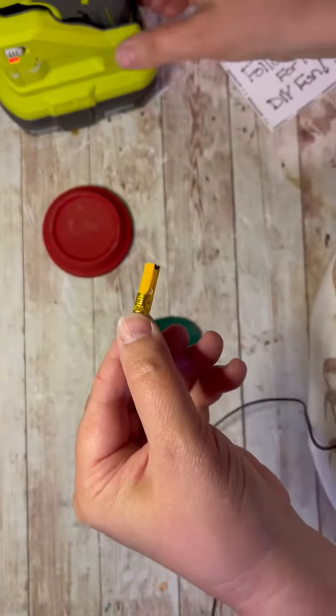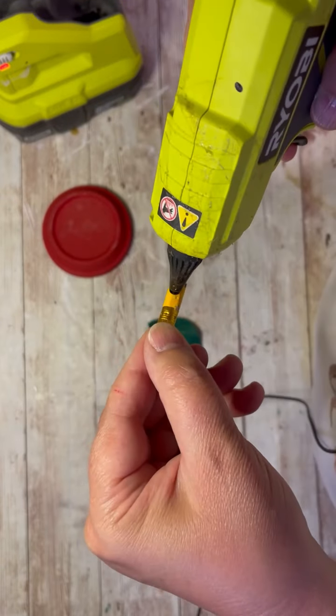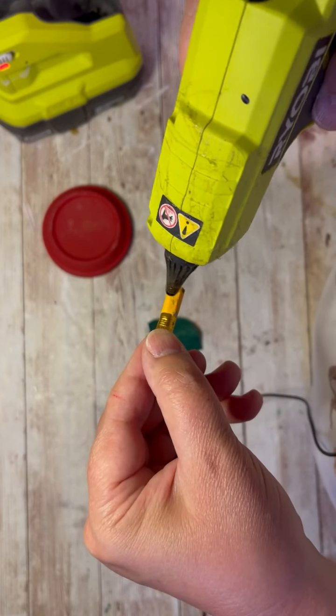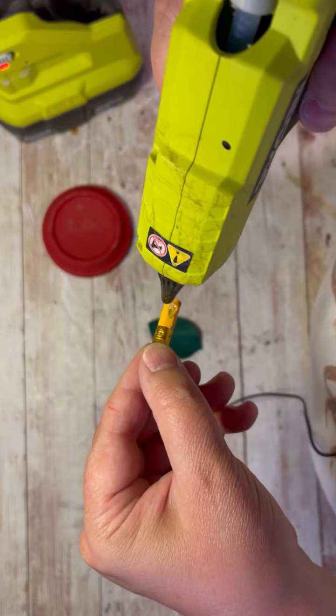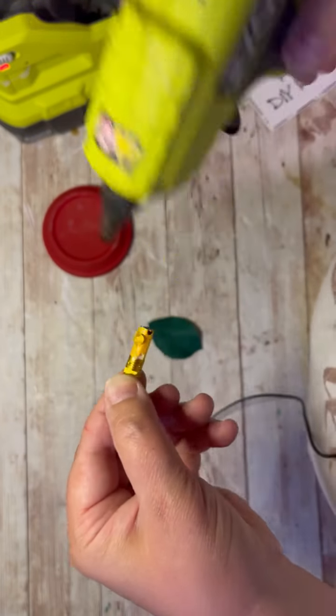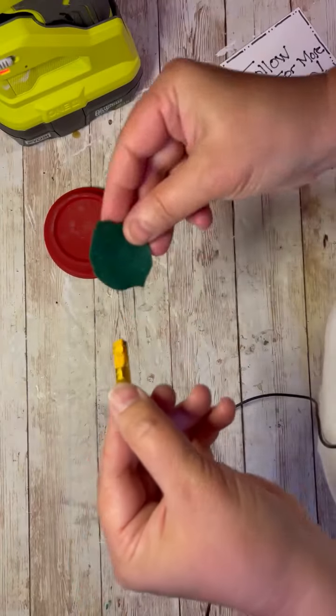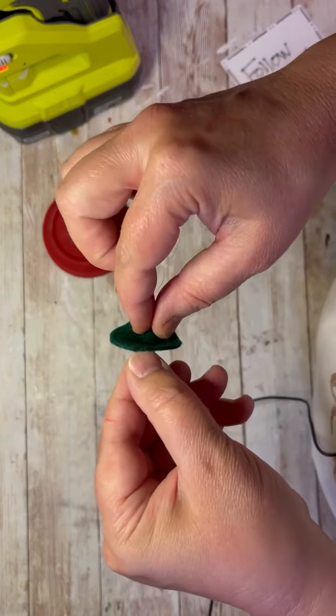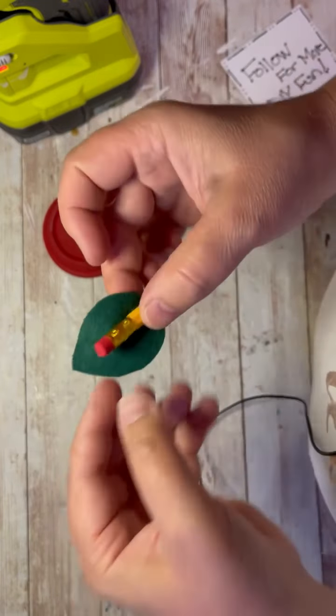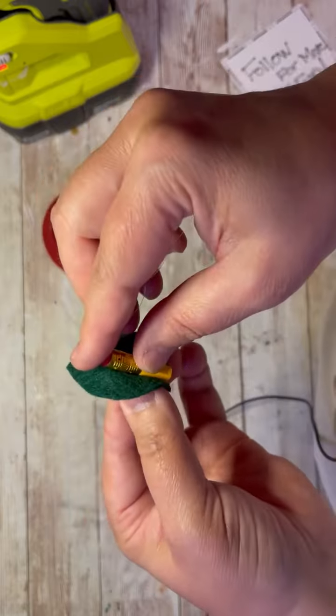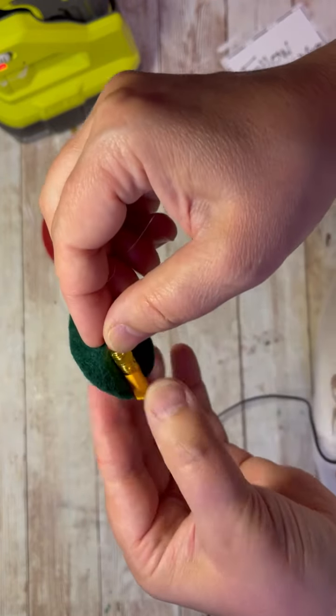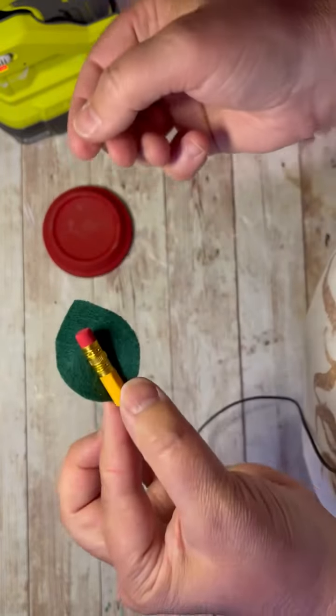Alright, so then we're going to take our little pencil and I'm going to put just a little dollop of glue on the side, just under that gold band part that is for the eraser. A little bit of glue on that. And then I'm going to take my leaf and I'm going to put it so that it is just at the bottom of that pencil. So see here, I have to just adjust it just a little bit. There we go. And that's that.